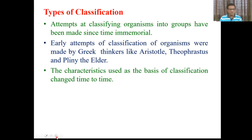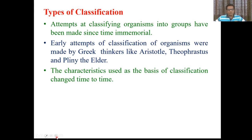The characteristics used as the basis of classification changed over time. The characters considered by Aristotle or Theophrastus are not considered now. Initially, people used very few and only easily observable characters for classifying. Aristotle and Theophrastus were not having well-equipped laboratories or microscopes. They wandered in forests and ecosystems, observed organisms, and on the basis of some external observable characters, they tried to classify them.